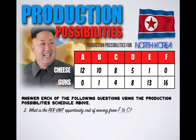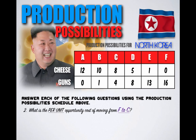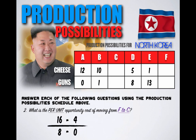Shifting from combination B to combination E would have an opportunity cost of nine units of cheese. Question number two: what is the per unit opportunity cost of moving from combination F to combination C? It looks like Kim Jong-un's tantrum is over and now he wants more cheese at the expense of gun production. North Korea will increase its cheese production from zero units to eight units and decrease its gun production from 16 units to four units.